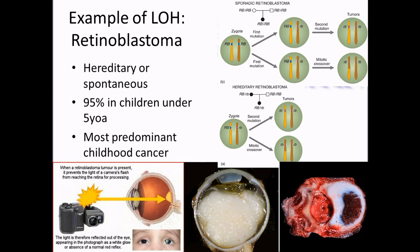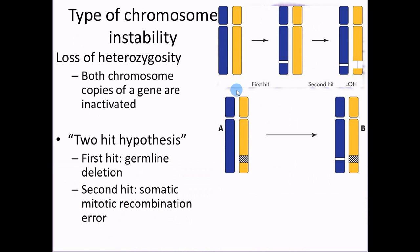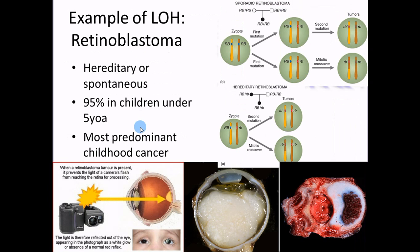One situation you'll see this in is retinoblastoma — a common childhood cancer. About 95% of retinoblastoma cases are children under five years of age, and it can be hereditary — mom or dad can pass it down — or it can be spontaneous. What if mom and dad gave you good genes, but epigenetics shut one off, and then a mutation shut the other off? That's all spontaneous, all in your somatic genes.